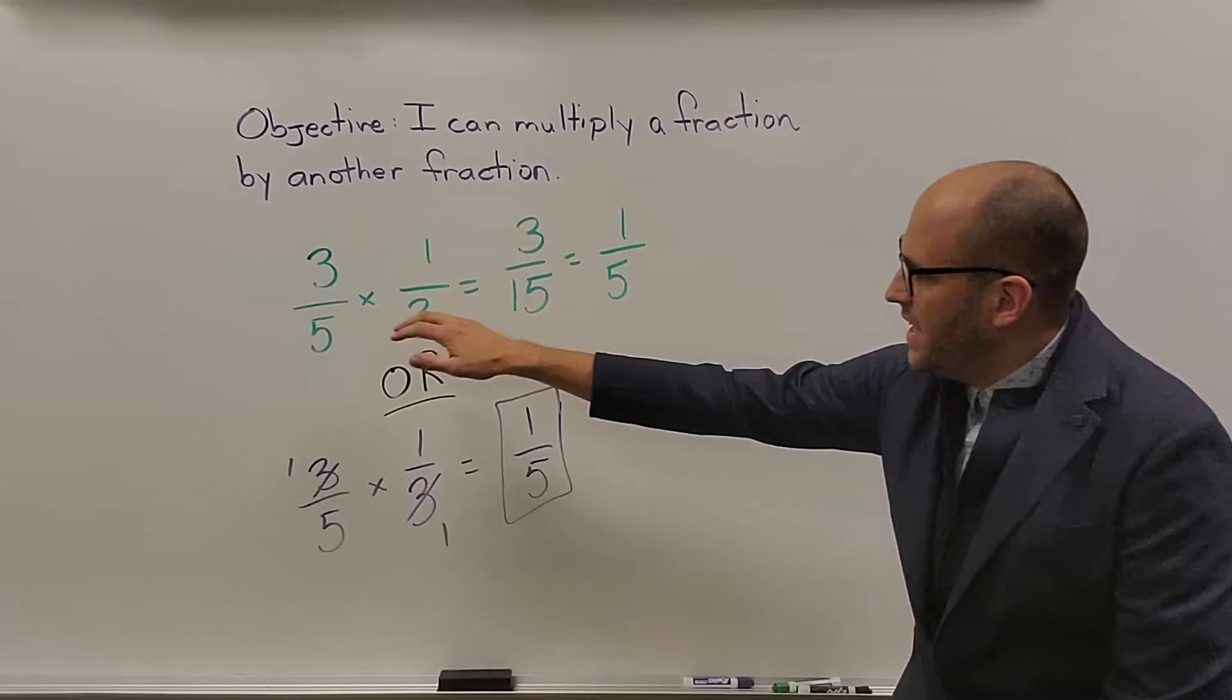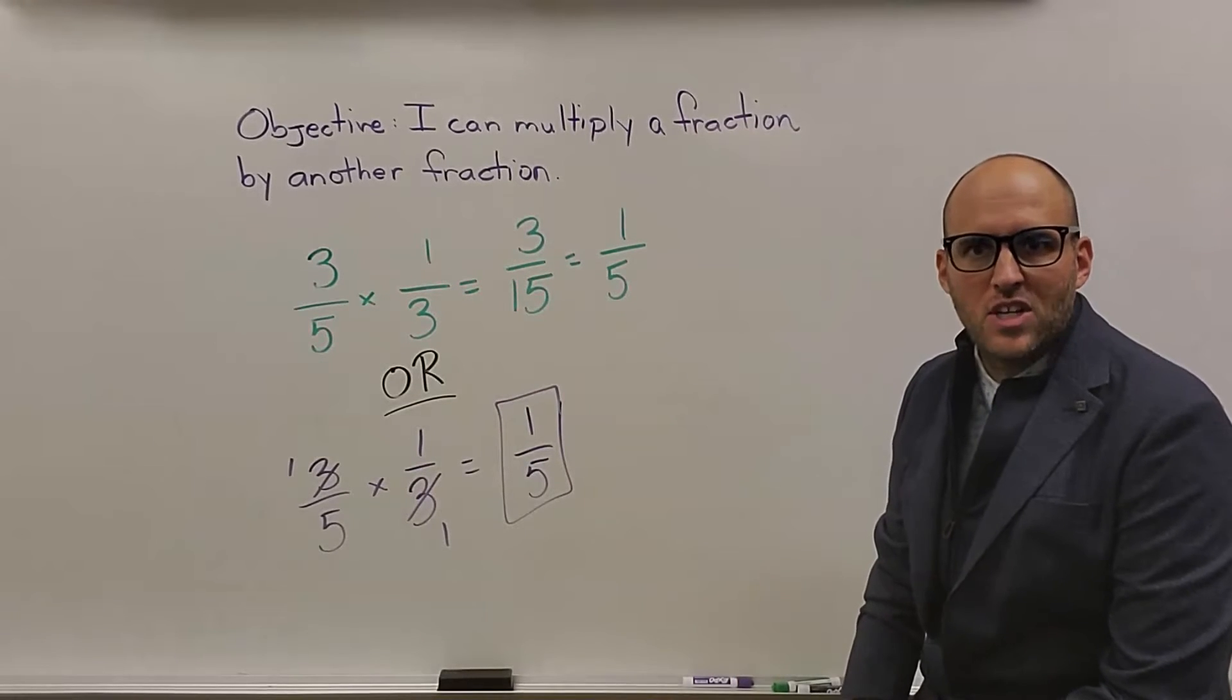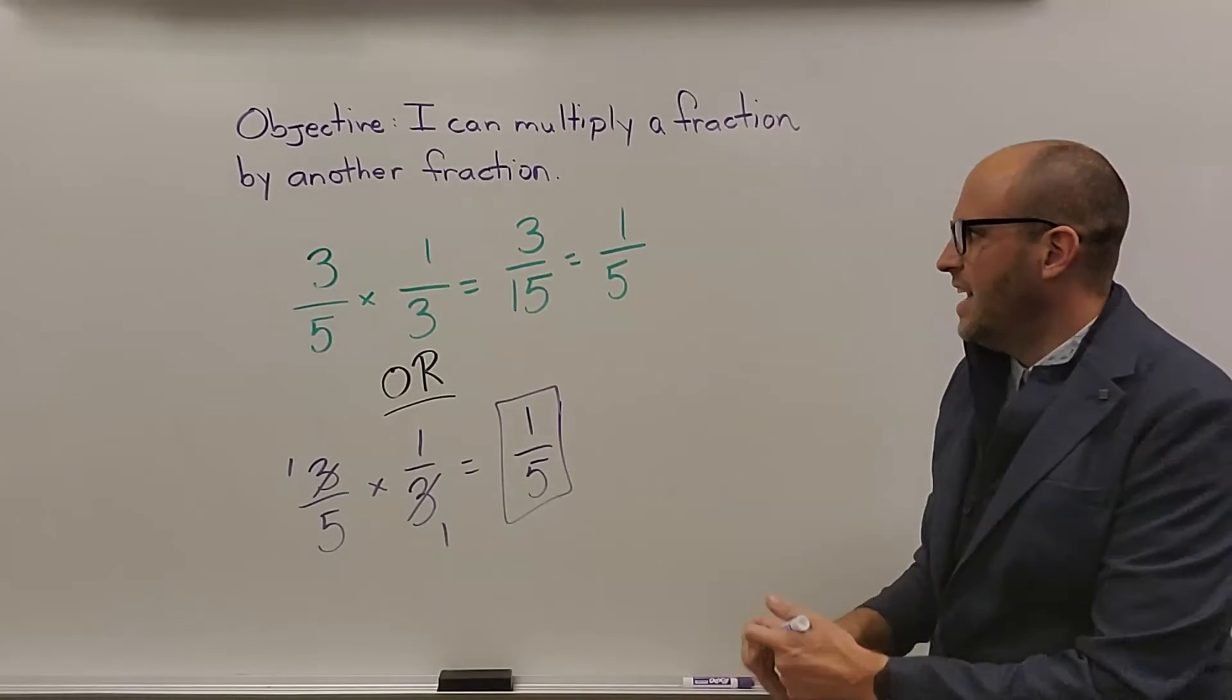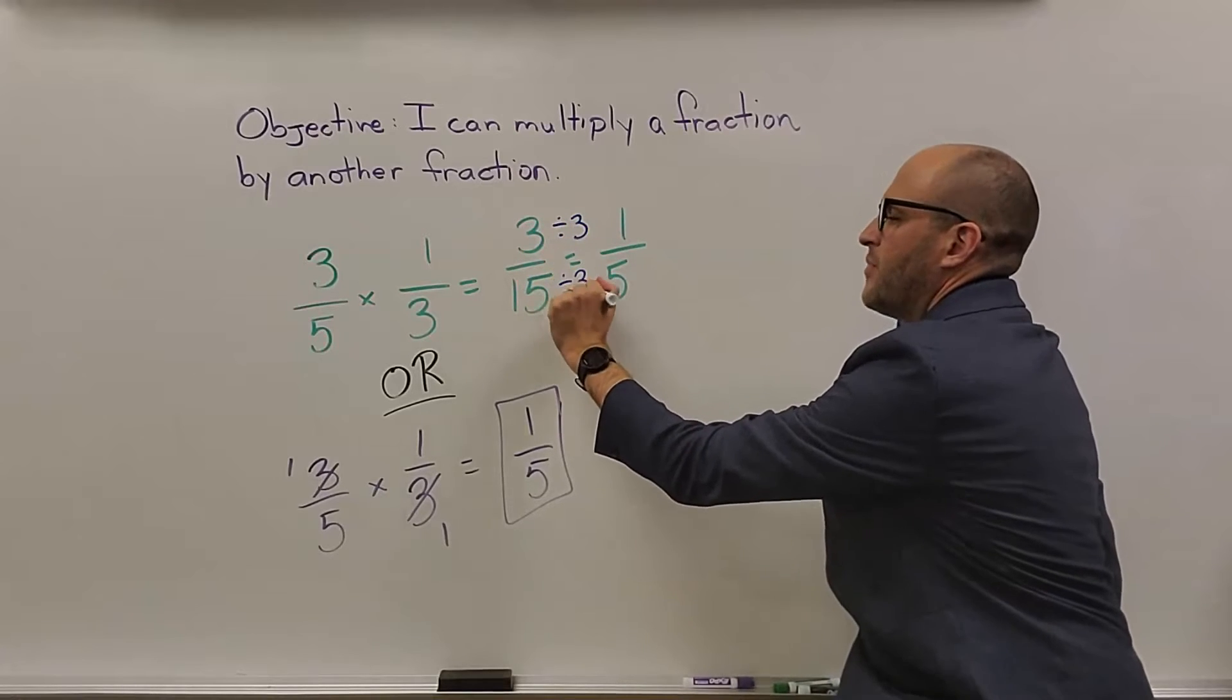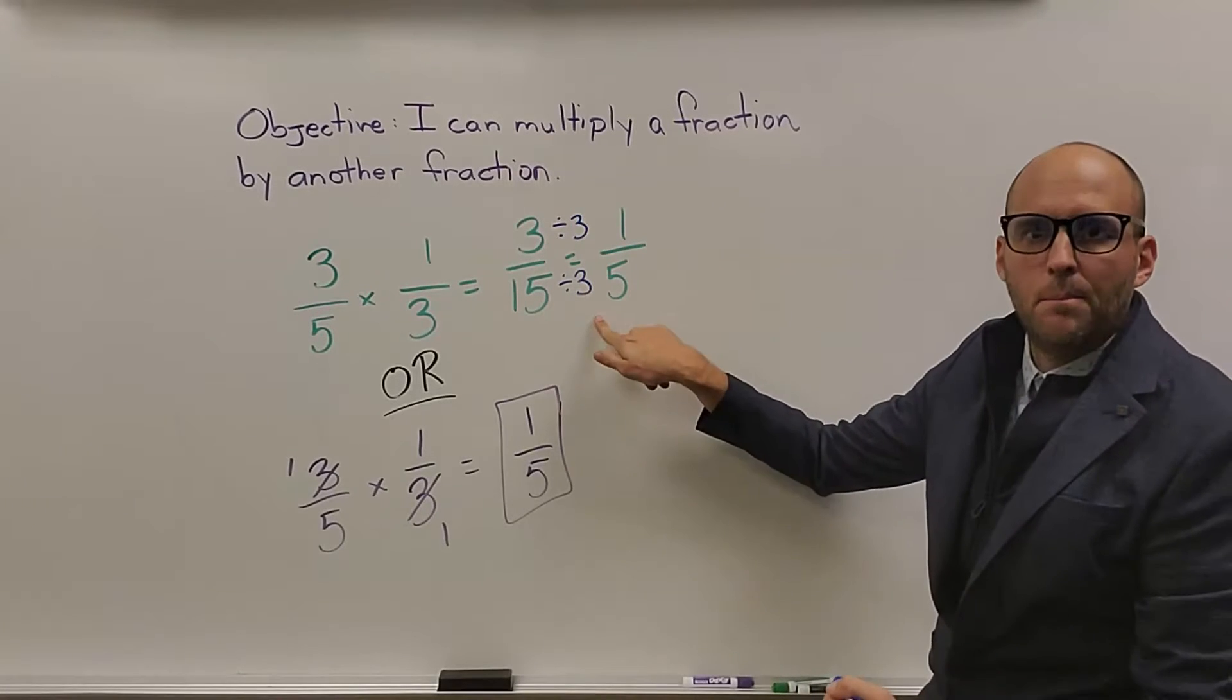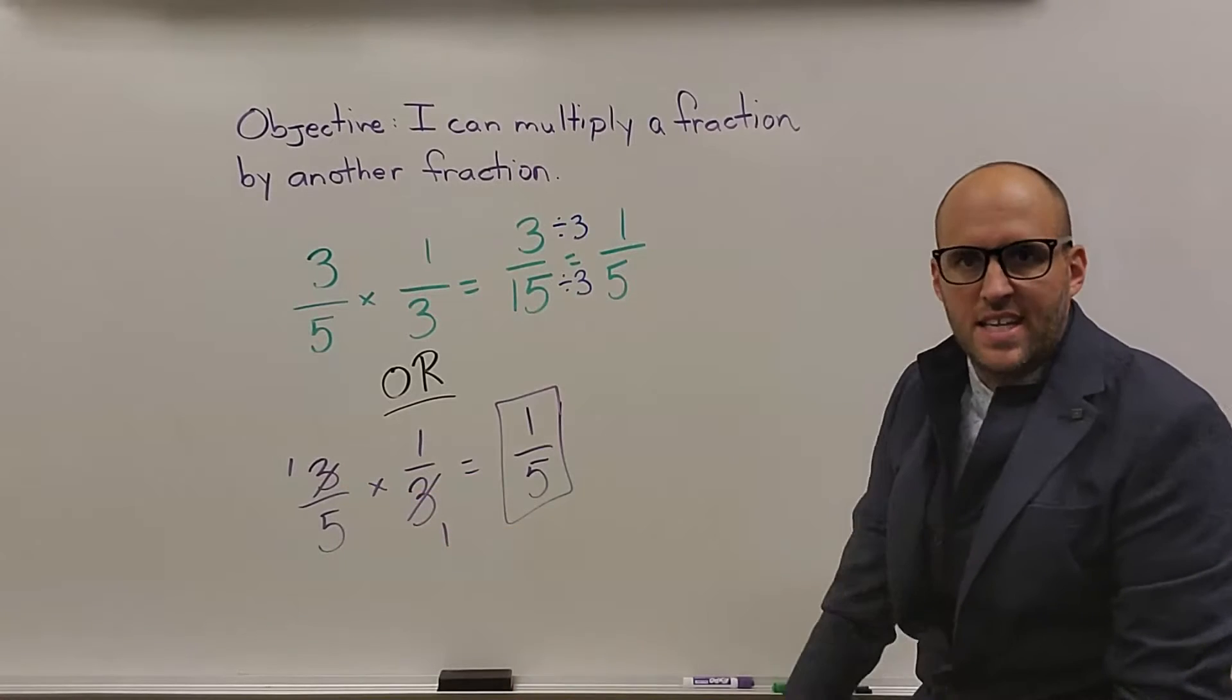So, as we see here, one way, you already have fractions. If you've seen my whole number by a fraction video, you just multiply 3 times 1 to get 3, 3 times 5 to get 15, and then here you simplified because 3 can go into both 3 and 15, which ends up with 1/5. But you can do this before you multiply. If you notice here, you see these 3's.